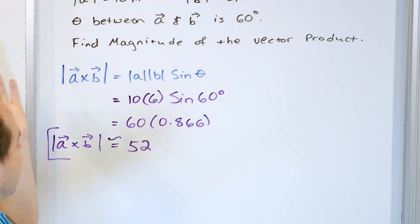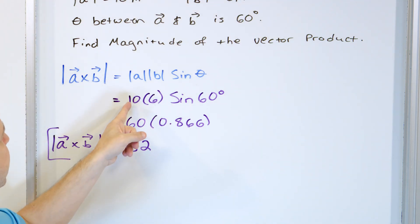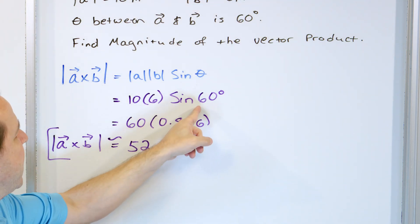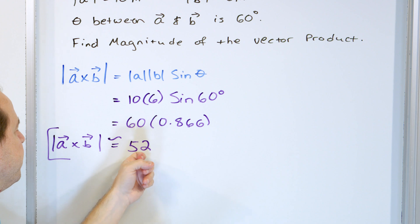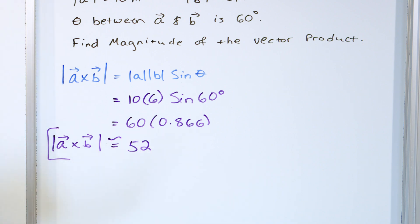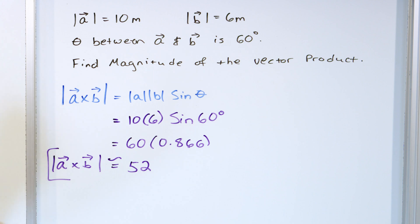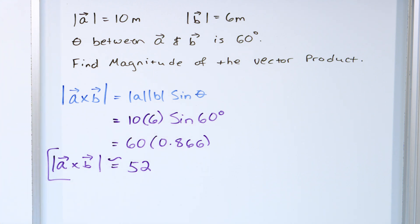So if you ever see a problem where you think you don't have enough information, read it carefully — it might not be asking for the full vector. The formula is magnitude of A times magnitude of B times sine of the angle between them; this gives the length of the cross product vector. If you wanted the direction, you'd need to know where the vectors are pointed and then use the right-hand rule.